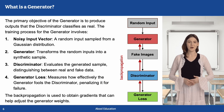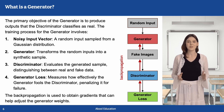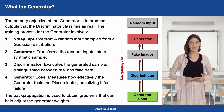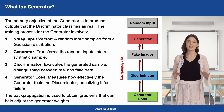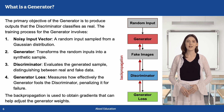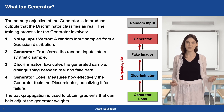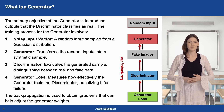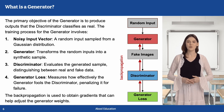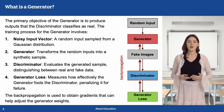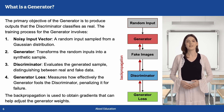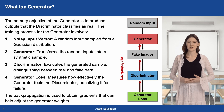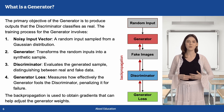The generator learns to create realistic samples through the loss function and backpropagation. First, a random input vector, or latent code, is sampled from a Gaussian distribution. Second, the generator transforms this noise and creates a synthetic data sample. Third, the discriminator evaluates the sample and predicts whether it is real or fake. Fourth, the generator loss is computed, measuring how well the generator deceived the discriminator. Finally, using backpropagation, the generator's weights are updated to improve its ability to fool the discriminator.